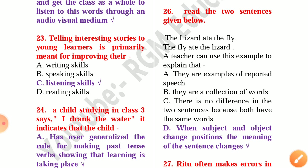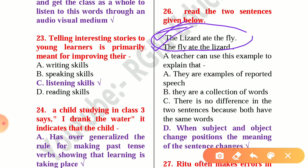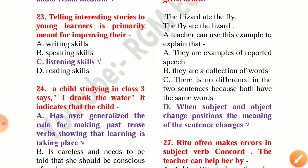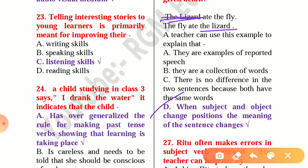Question number 26: Read the two sentences — 'The lizard ate the fly' and 'The fly ate the lizard.' A teacher can use this example to explain that when subject and object change positions, the meaning of the sentence changes. Here, 'the lizard' and 'the fly' swap roles as subject and object across both sentences.